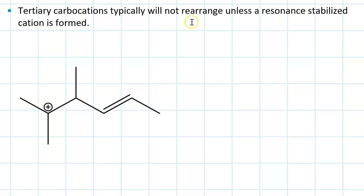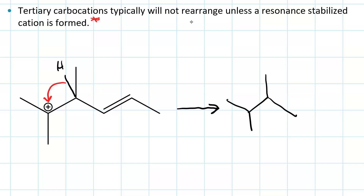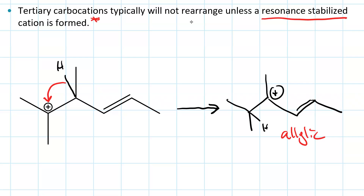According to our textbook, tertiary carbocations won't rearrange unless a resonance-stable cation is formed. Some of my organic chemistry colleagues don't necessarily agree — that if you can form another tertiary cation, that may happen. But you could definitely do a methide shift here, and that would give us a carbocation that is both tertiary and allylic. Allylic is resonance stabilized and therefore more stable than tertiary.